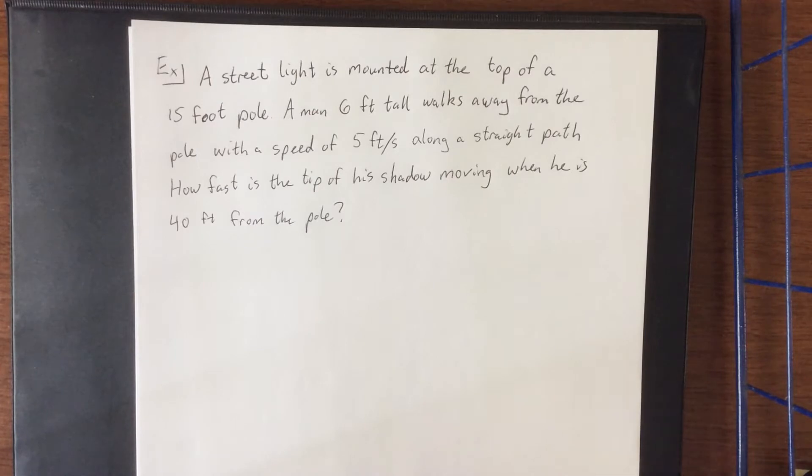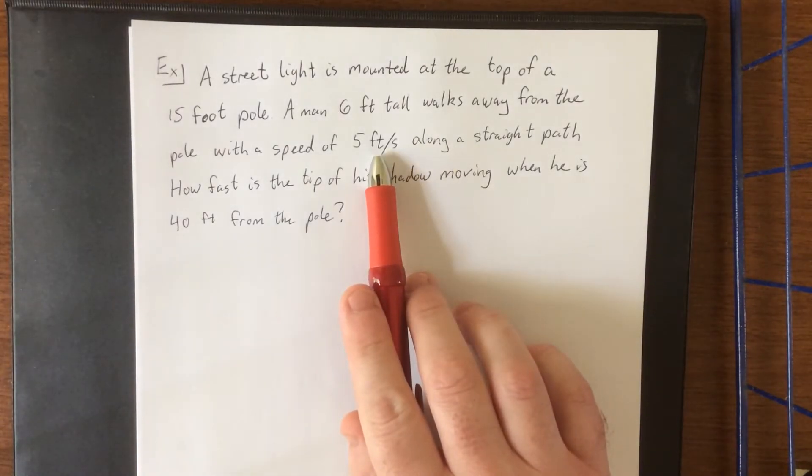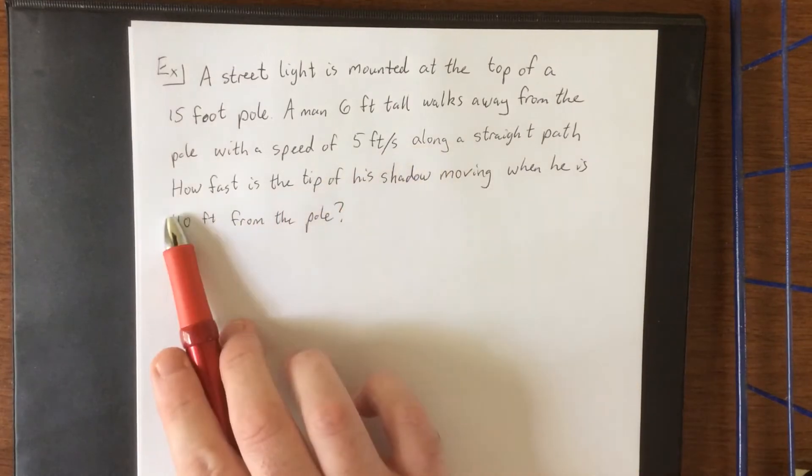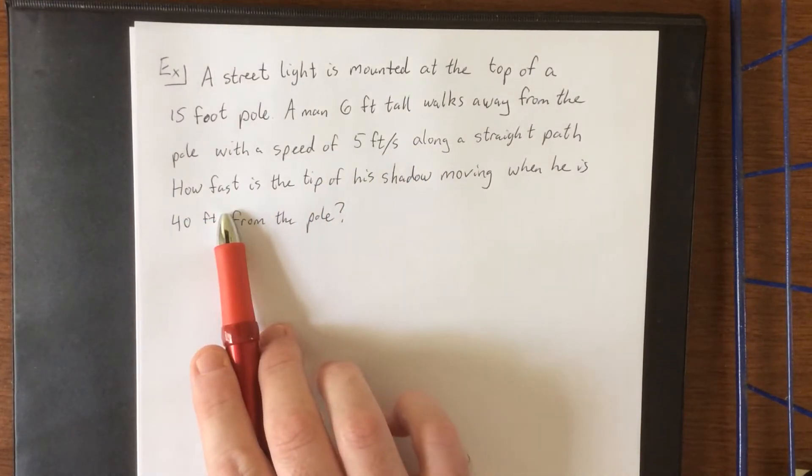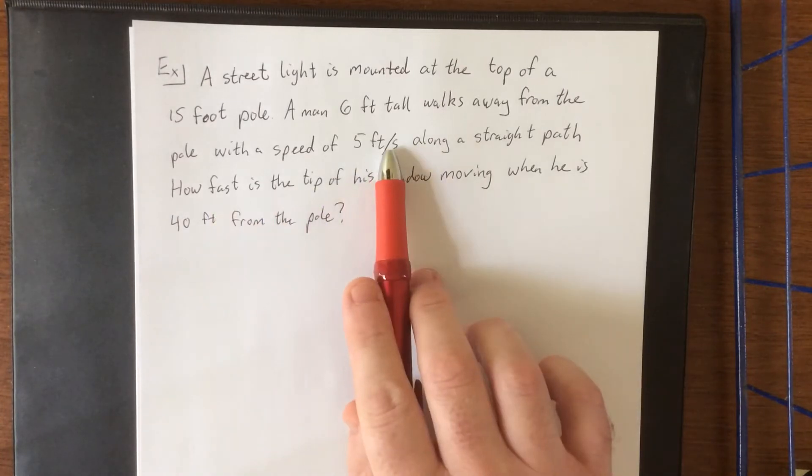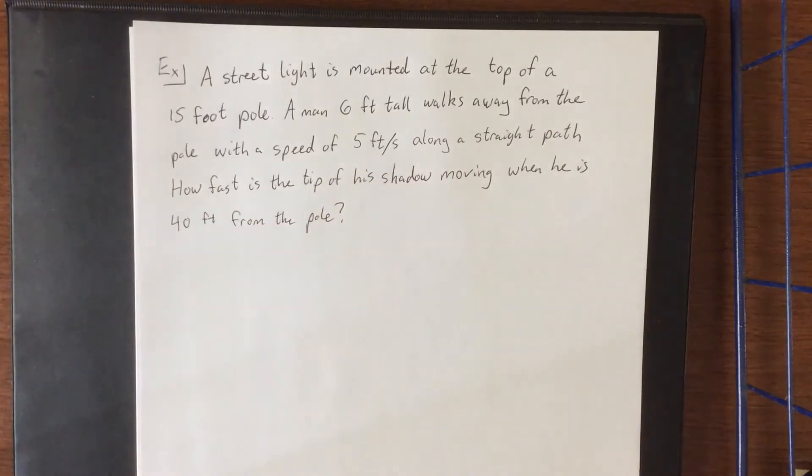So first and foremost, we read this problem and we say to ourselves, how can we recognize this as a related rates problem? First thing that I notice is that we have been given a rate in the problem and we're posed the question, how fast? How fast is usually inquiring about another rate. So given a rate, we're asked to relate it to another rate.